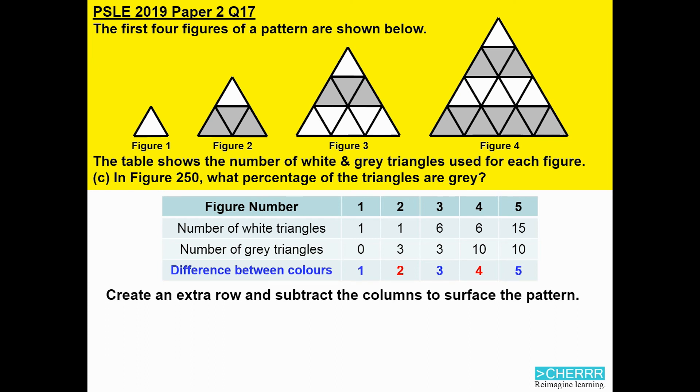And you will find that the difference actually is exactly the same as the figure number. For all the odd numbers, you will find that there is more white than grey. And for all the even numbers, there are more grey than white. Now we are calculating for figure 250. And figure 250 is an even number. So grey must be more than white by 250.